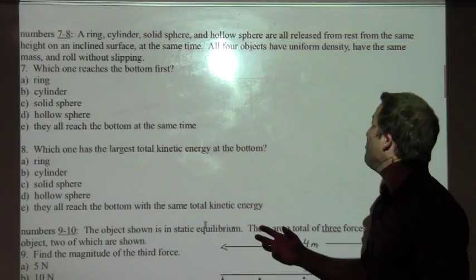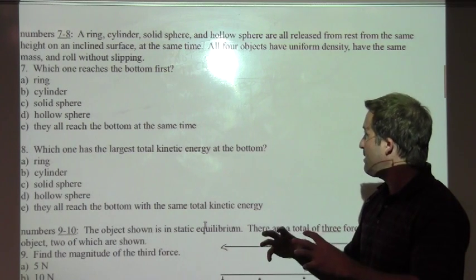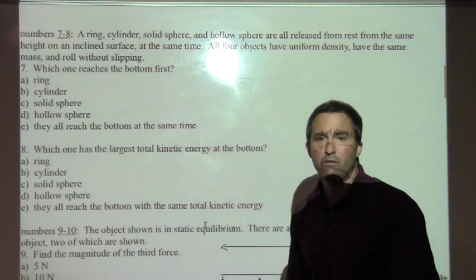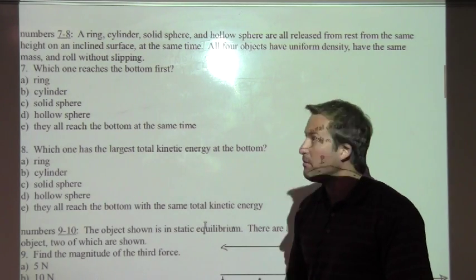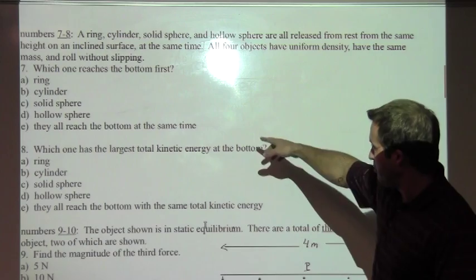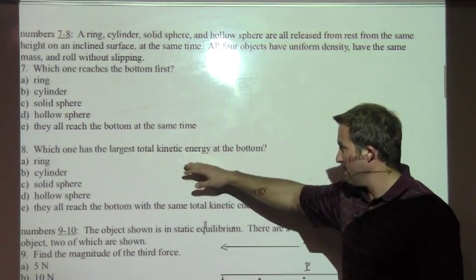They're all uniform density. They all have the same mass, and it doesn't say anything about their radius. We're going to release them from rest on an inclined surface and they all roll down without slipping. So there's some key words here. There's two questions. I actually want to jump to number eight first, it's maybe a bit easier to argue here.